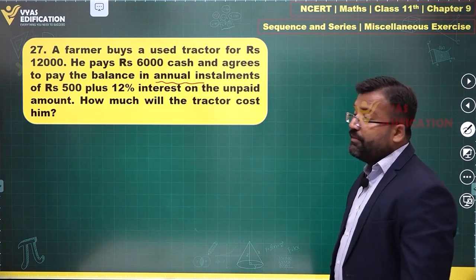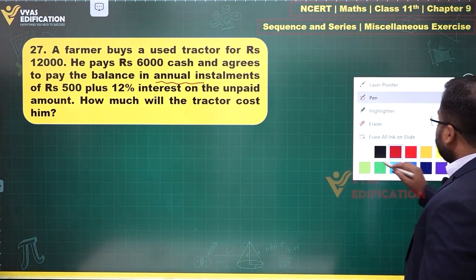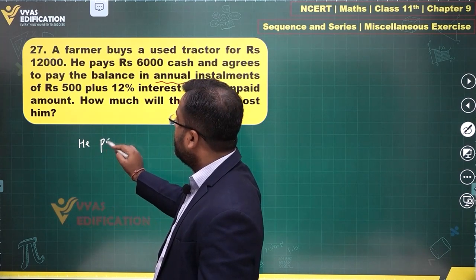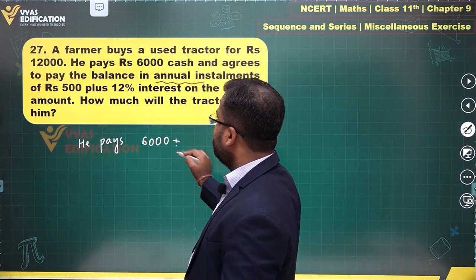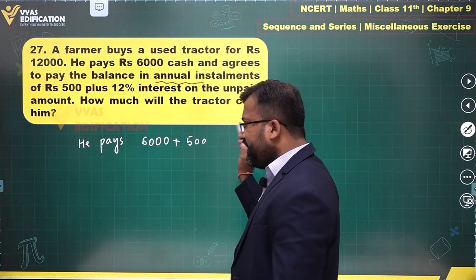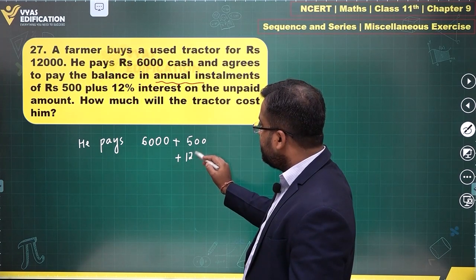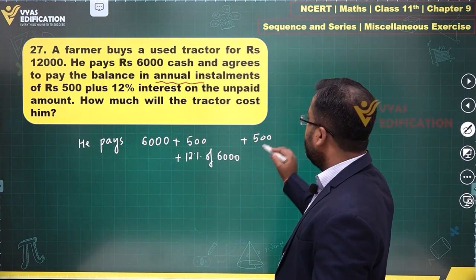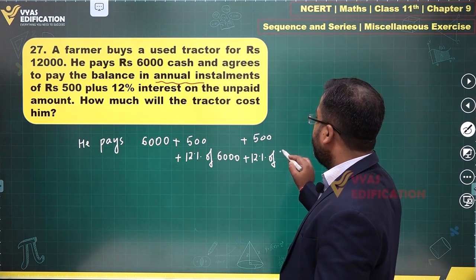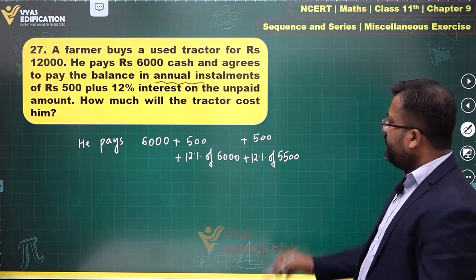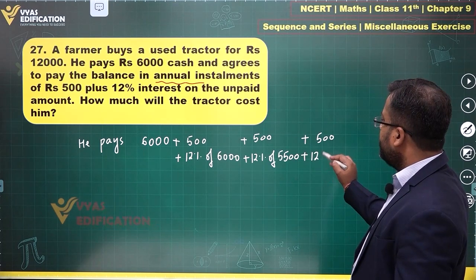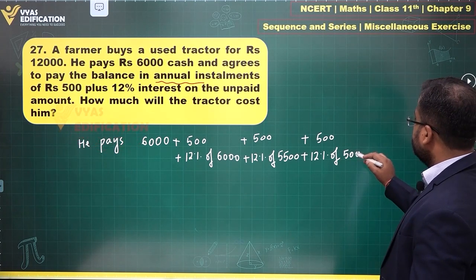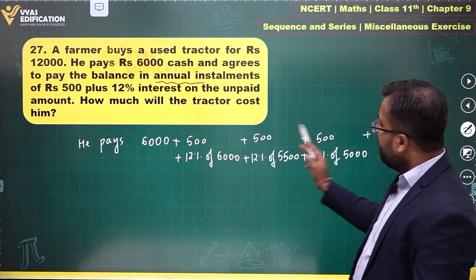The extra amount he pays is 12 percent interest on the unpaid amount. He pays 6,000 initially, plus 500 plus 12 percent of 6,000 in the first year. Second year: another 500 plus 12 percent of 5,500, since that's the remaining amount. Then another 500 plus 12 percent of 5,000, and so on. This 500 payment happens 12 times.